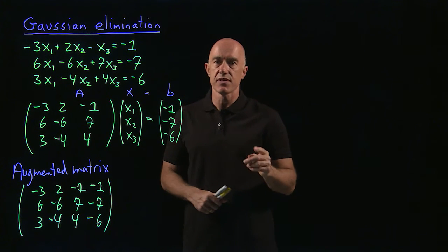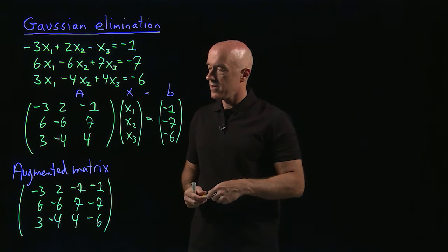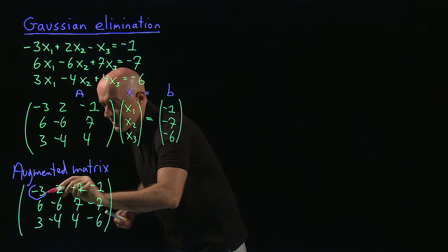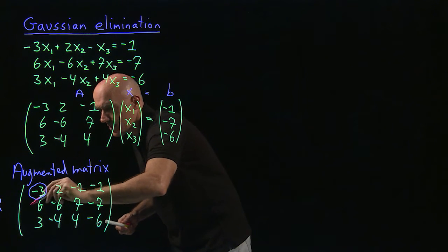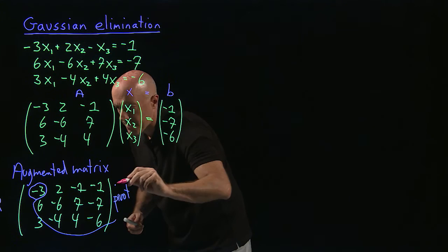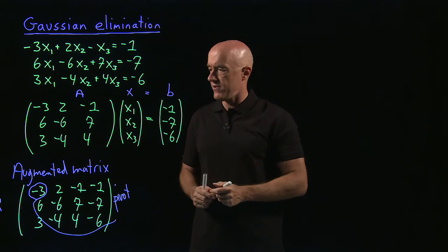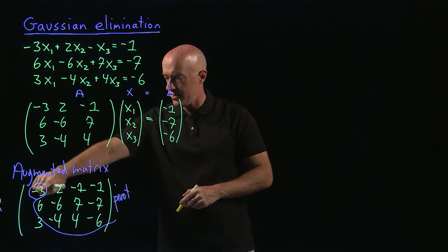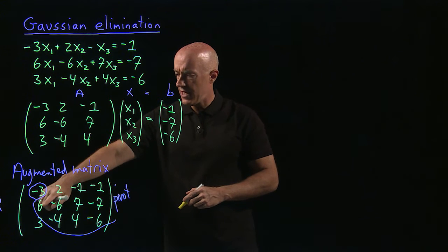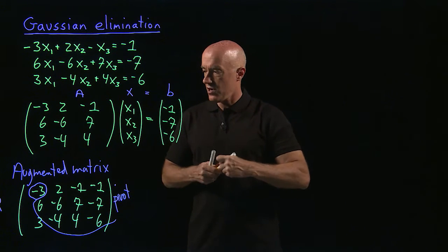We're going to take this matrix and add rows multiplied by a constant to rows underneath, in order to bring this matrix to upper triangular form — at least the A part. If we do that, the solution will be very easy. We start here: this is called the pivot position — that's the pivot. We have to eliminate all the numbers below the pivot, so we want to get rid of the six right below it.